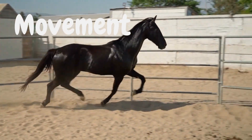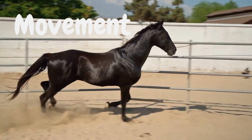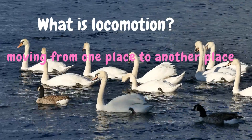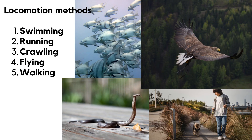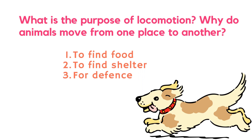Under the topic movements, let's understand about locomotion. It is the movement from one place to another place. Modes of locomotion are swimming, running, crawling, flying, and walking. The purpose of locomotion — why do animals move from one place to another — is to find food, to find shelter, and for defense.